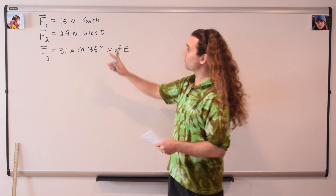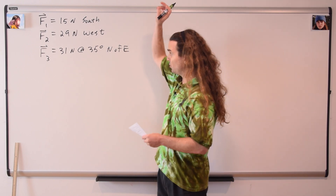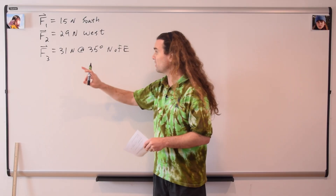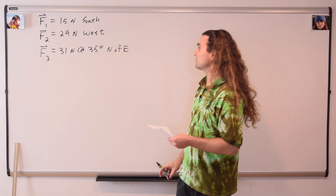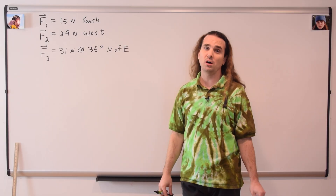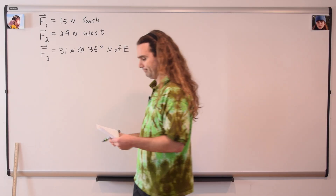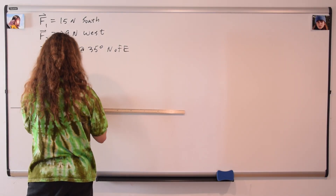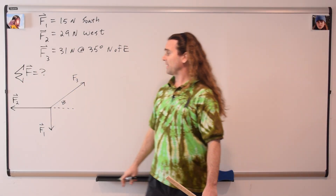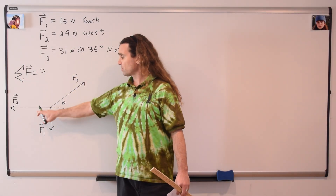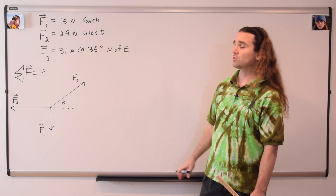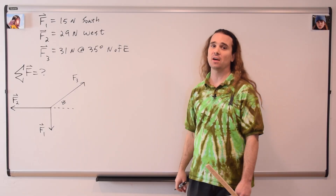So we have our three forces: force one, 15 newtons south; force two, which is 29 newtons west; and force three, which is 31 newtons at an angle of 35 degrees north of east. We should, of course, draw a vector diagram. We have our vector diagram with force two, force one, and force three, and we're solving for the net force — we're going to add all those forces together.